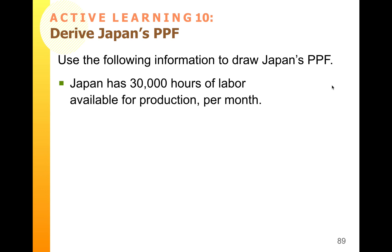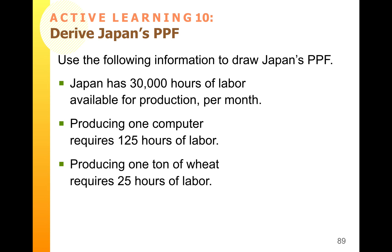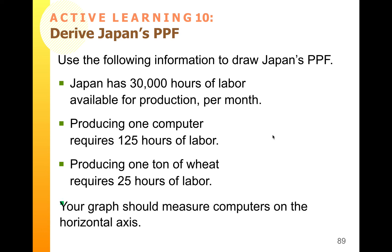Japan only has 30,000 labor hours a month available for production. It requires 125 hours of labor to make one computer and 25 hours of labor to make a ton of wheat. Go ahead and use those figures to figure out the maximum amount of wheat and the maximum amount of computers Japan can produce. Just like the U.S. graph, make sure you put computers on the horizontal axis and wheat on the vertical axis.